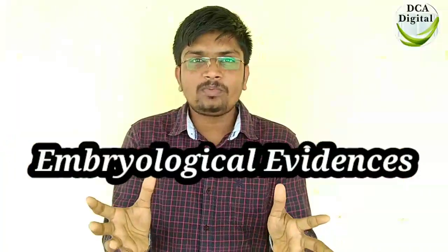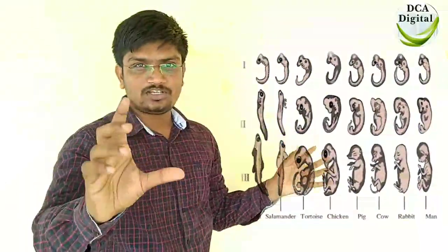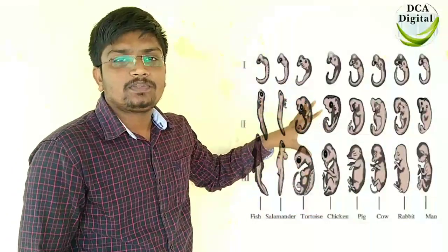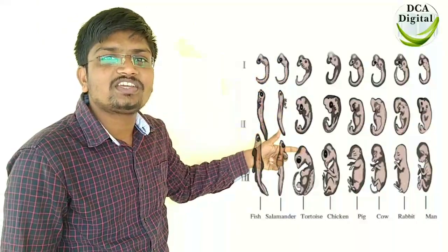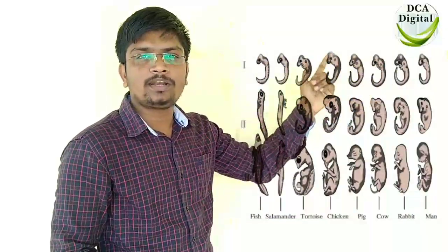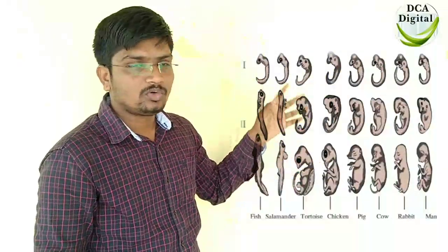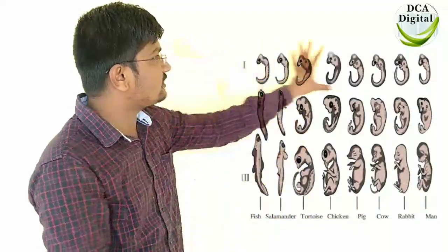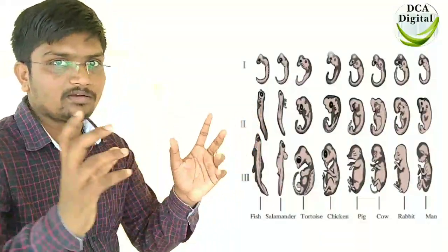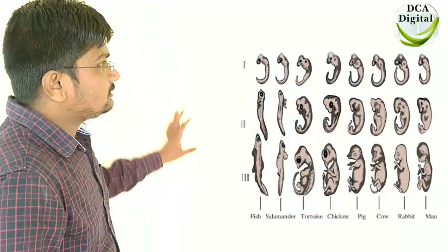The last evidence is embryological evidence. Looking at this figure, it shows embryological evidence with first and second stages. If we observe the first stage of different animals — human, rabbit, pig, salamander — we can conclude that the first stage is a common stage for each of these animals.